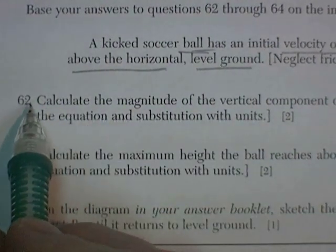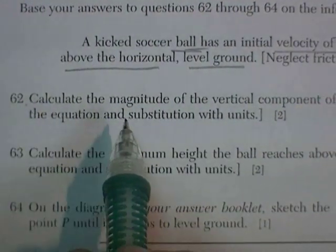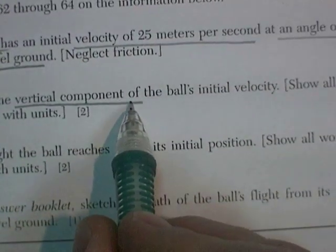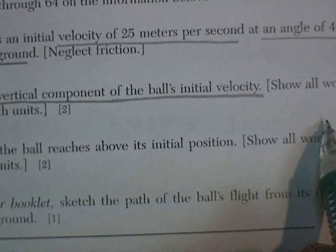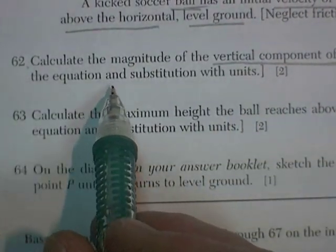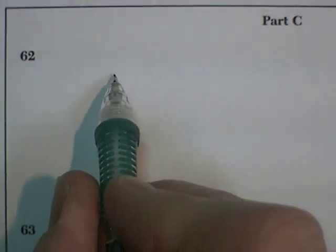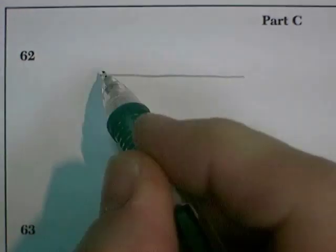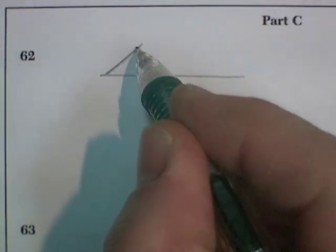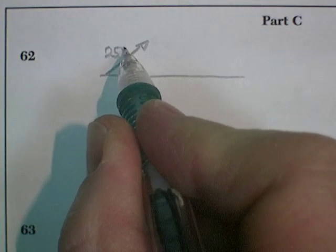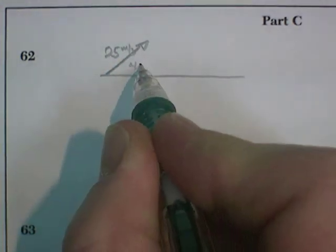First one, question 62. Calculate the magnitude of the vertical component of the ball's initial velocity. Show all work, including the expression, the equation, and substitution with units for two points. Well, when I do these, I like to have a picture. There's the ground. We kick the ball. 25 meters per second at 40 degrees.